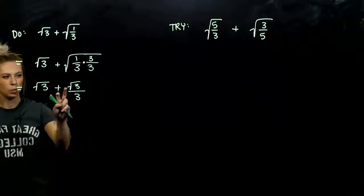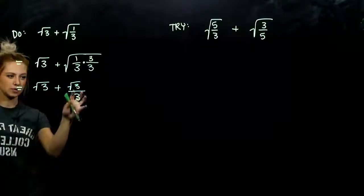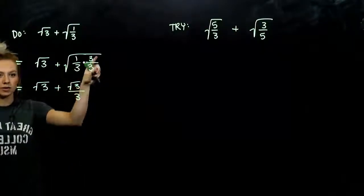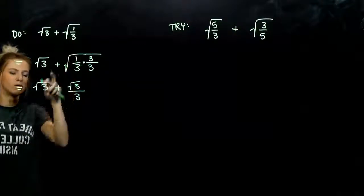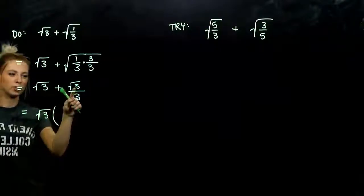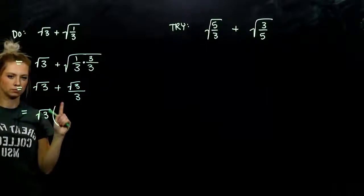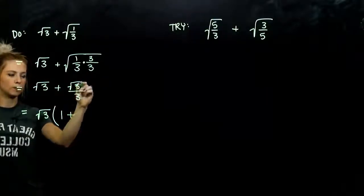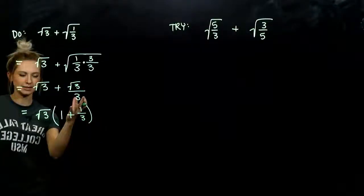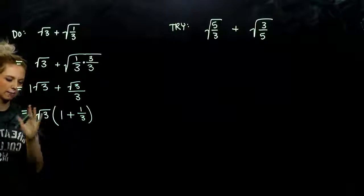Now, what about these two radicals? Do we have the same radicands? Yes, because this 1/3 is on the outside of that radical — it's not contained underneath the entire thing like it was before. So I can factor out root 3 from both of these pieces. If I take root 3 out of my first term, I'm left with 1. And if I take root 3 out of my second term, I'm left with 1/3.